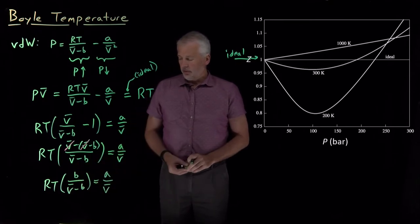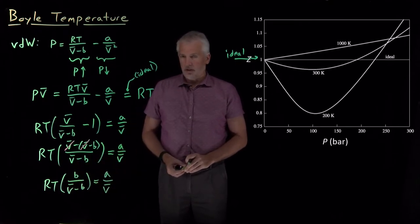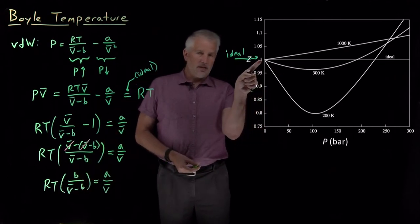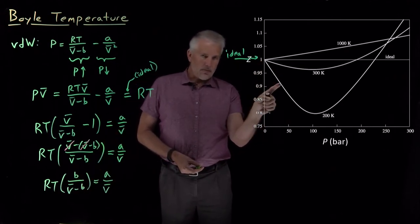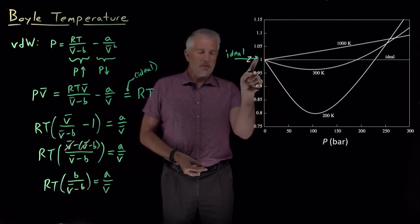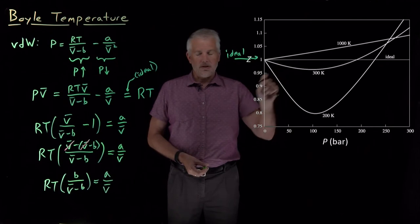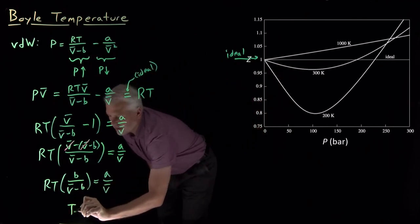So that looks a little bit simpler. We can rearrange this now and solve for temperature. Remember, what we're looking for is the temperature where the gas doesn't have its compressibility factor drop as we increase the pressure or have it go up, but we want to find the temperature where it stays flat. So we're solving this expression for the temperature.